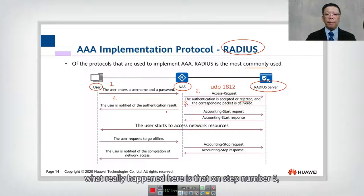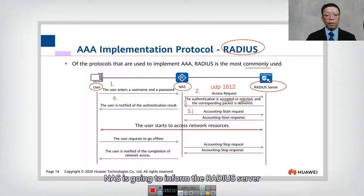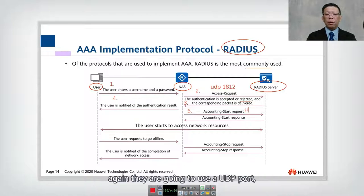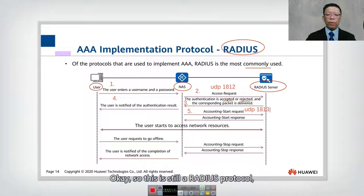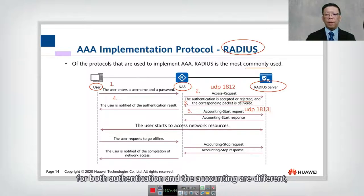Because authentication is successful and accounting has also been configured on the RADIUS server, on step number five the NAS informs the RADIUS server to start accounting. For accounting they again use UDP, but this time on port 1813. So this is still the RADIUS protocol, but the port numbers for authentication and accounting are different.